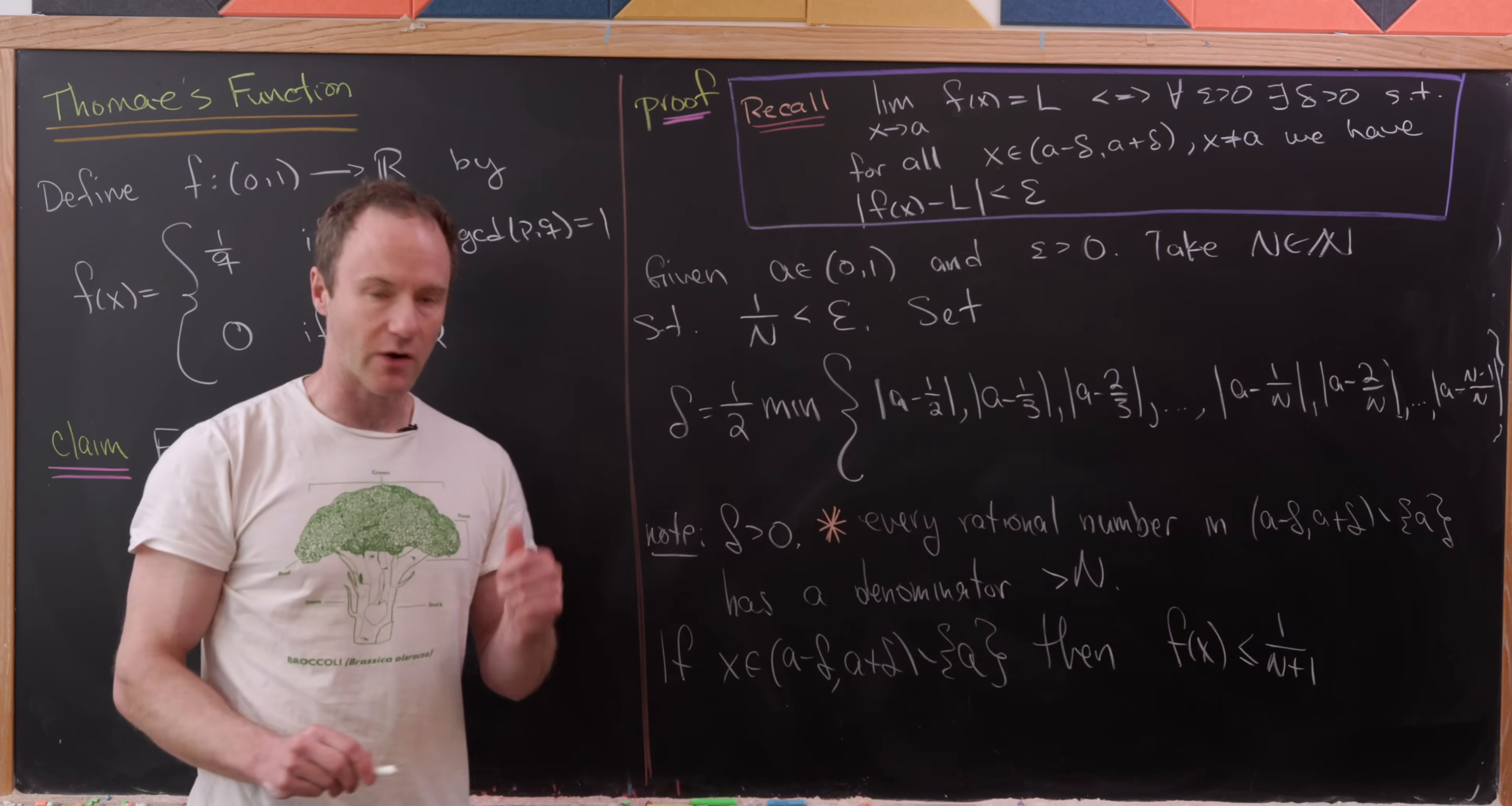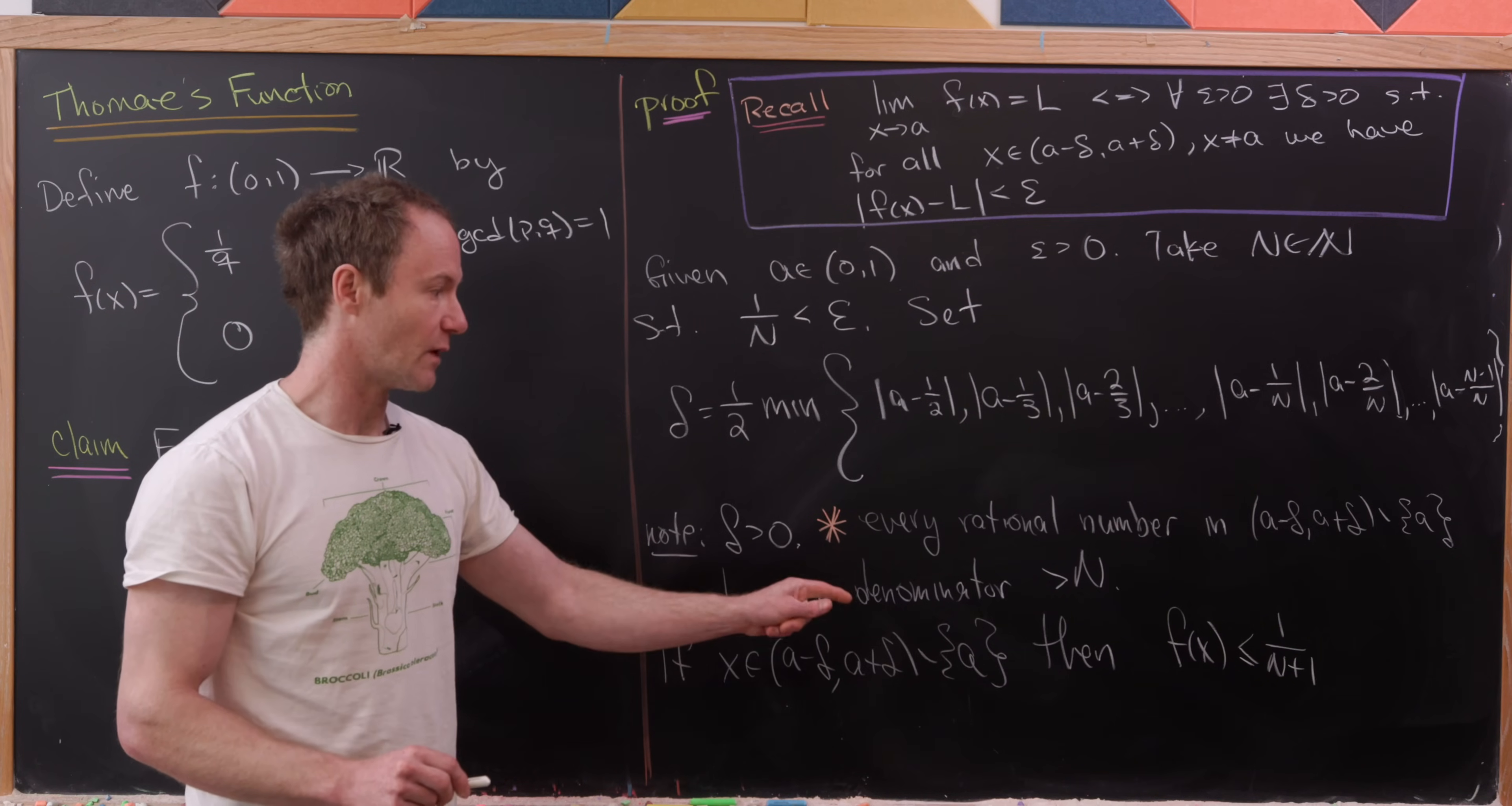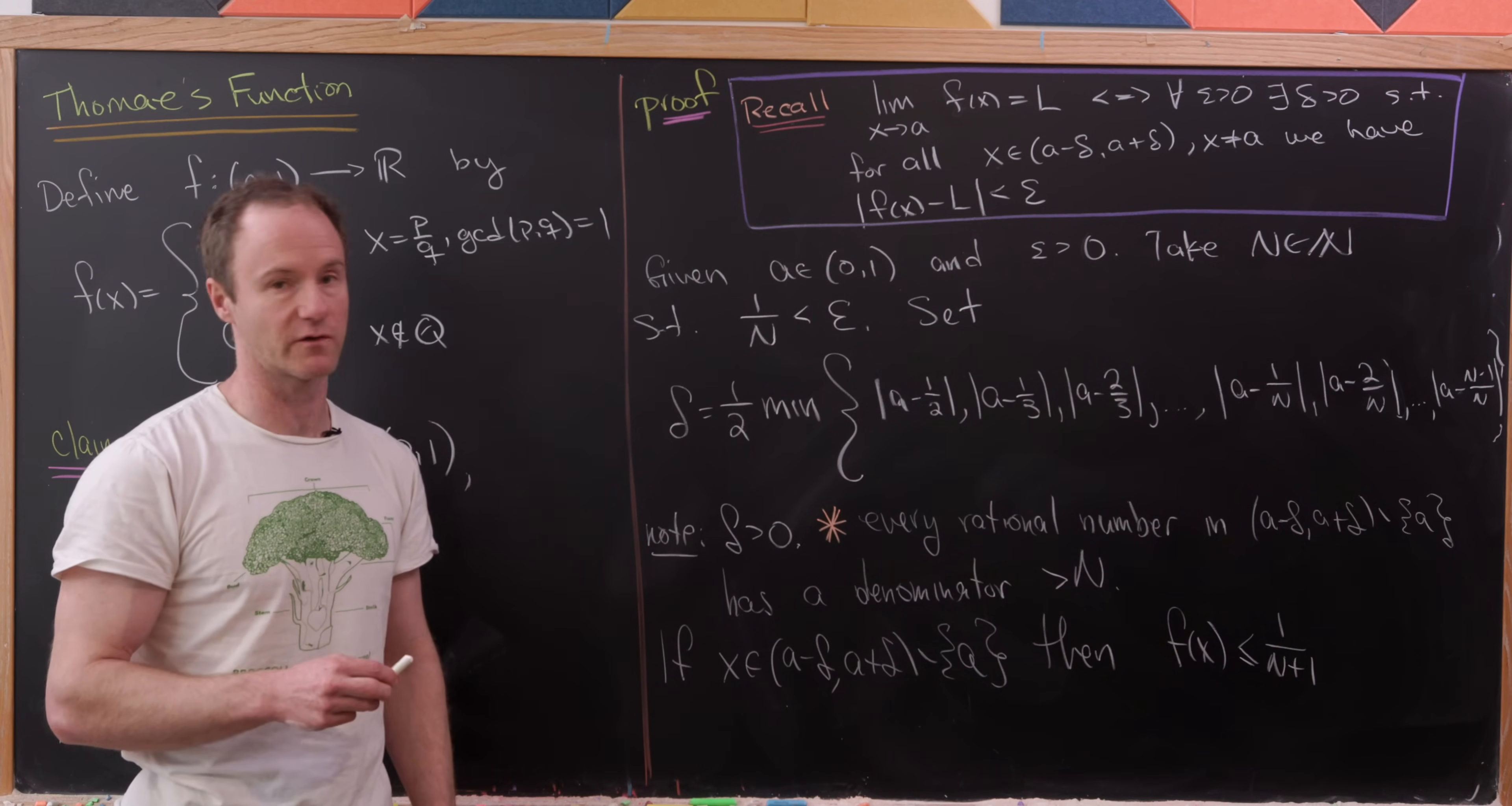Now, how do we know that? Well, notice that the denominator of X is going to be bigger than or equal to N plus 1. And so that means that, well, F of X, well, what does it do? It extracts the denominator. And so that means that F of X is less than or equal to 1 over N plus 1. The biggest it can be is exactly 1 over N plus 1.